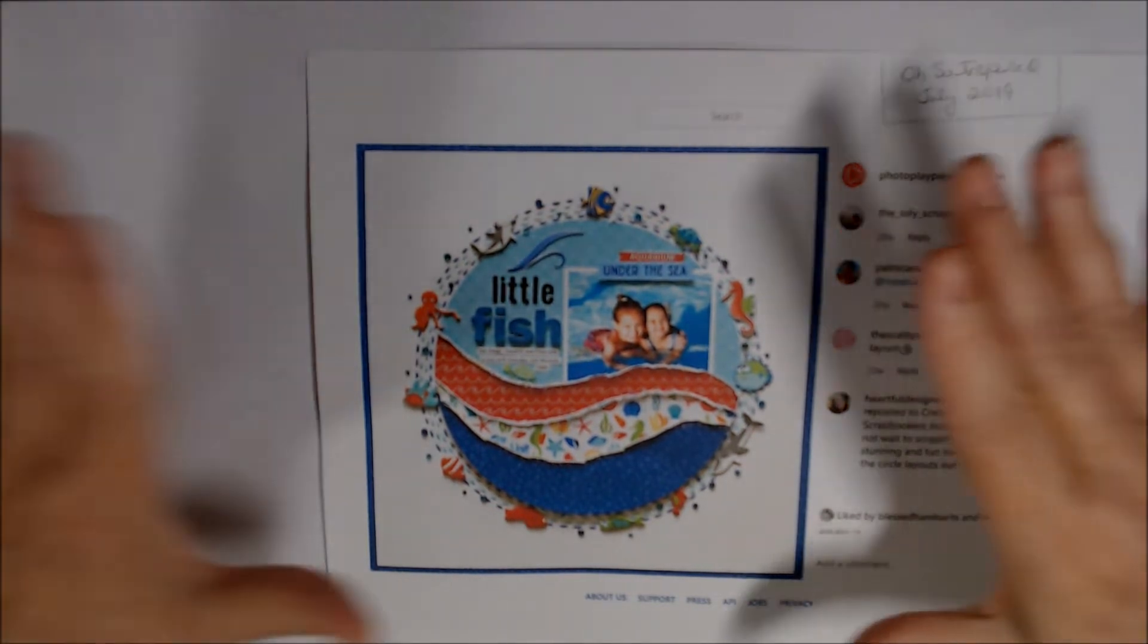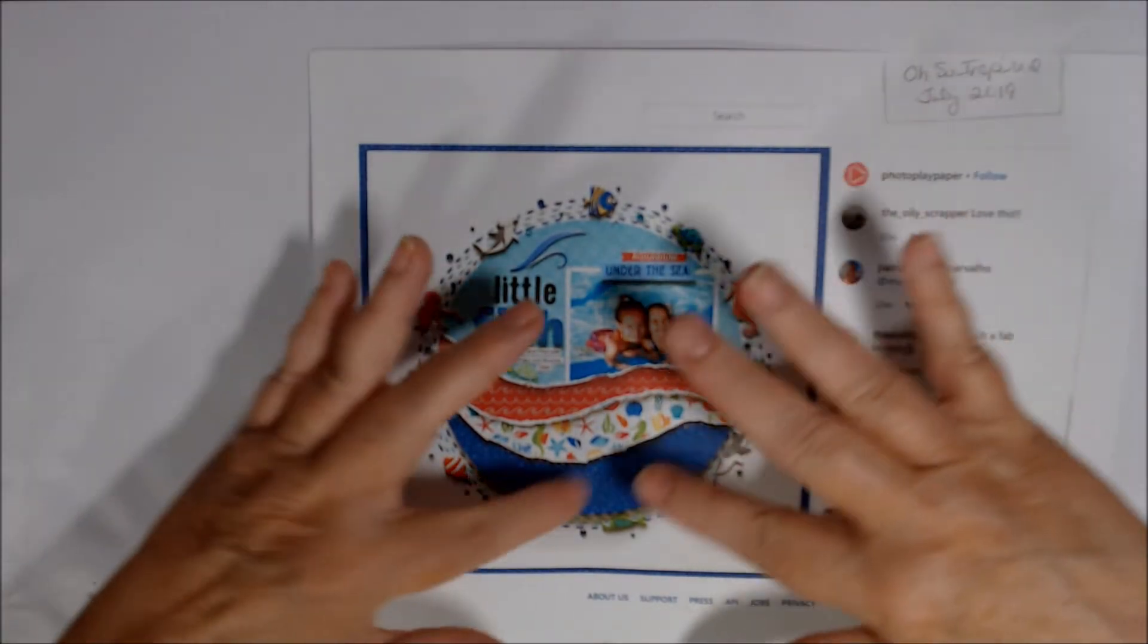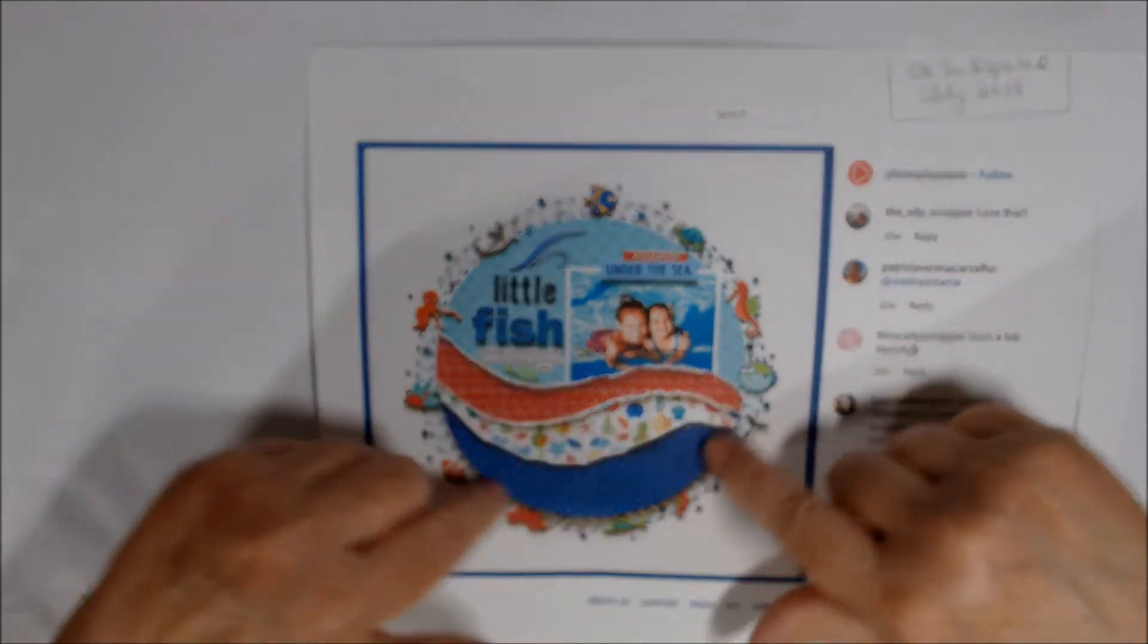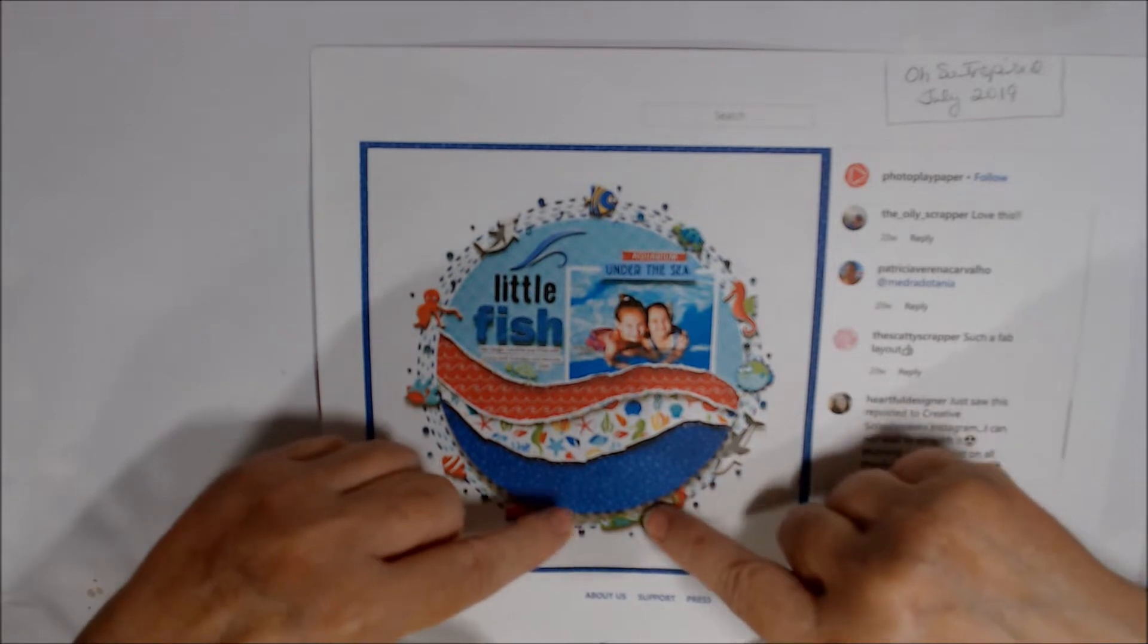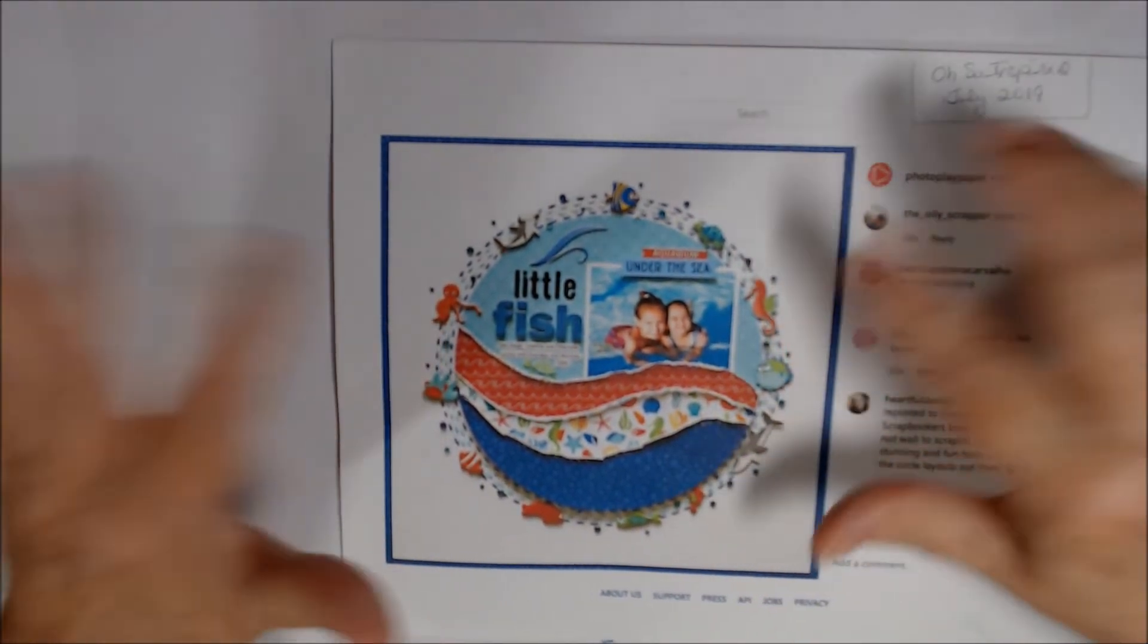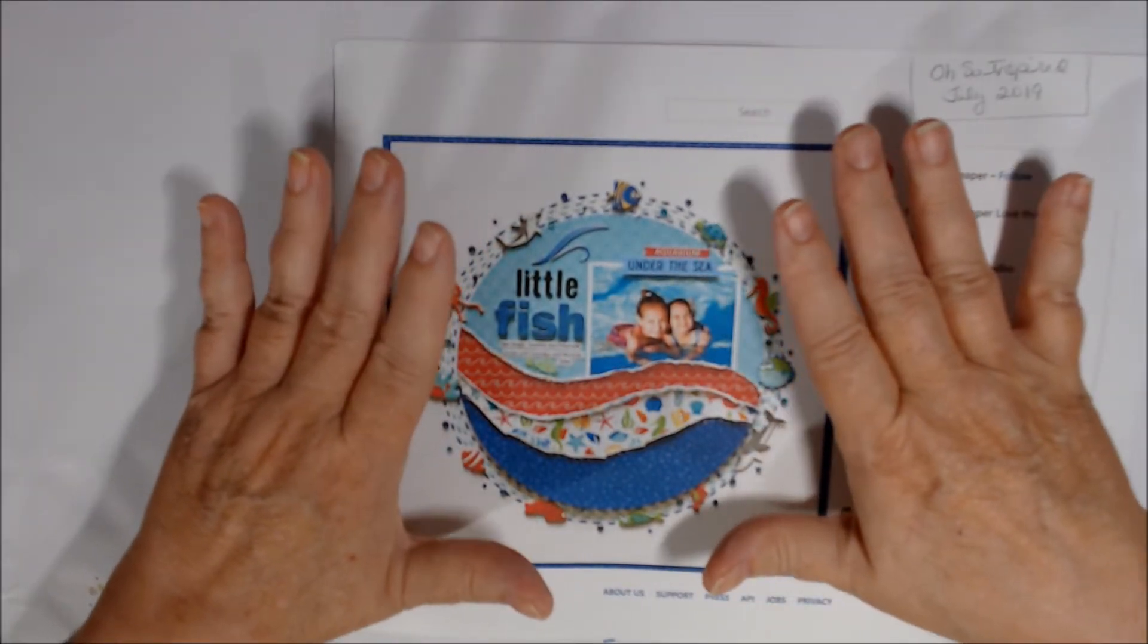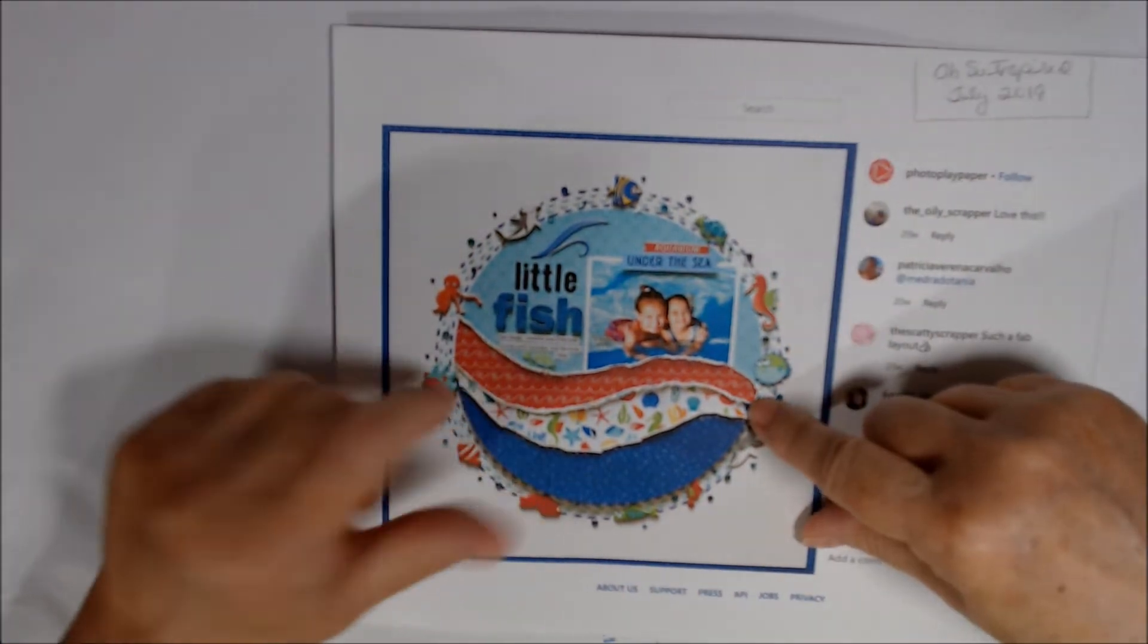And this is our inspiration for this month. It looks like it was a scrapbook layout. Little fish. The kids are in the water. Really cute paper and little fish and octopus and turtles and seahorses all around and things. So definitely vacation-y pool kind of thing. It looks like it was a cruise.